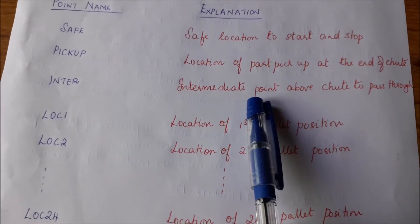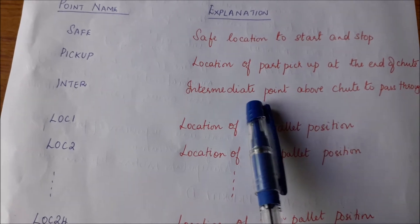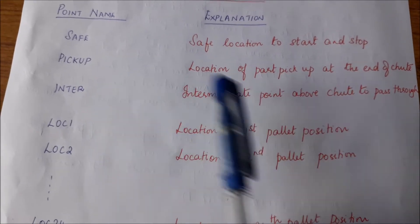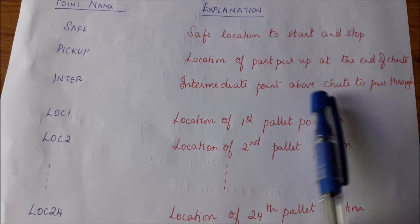Inter is a point above the shoot where the robot arm can safely pass through.